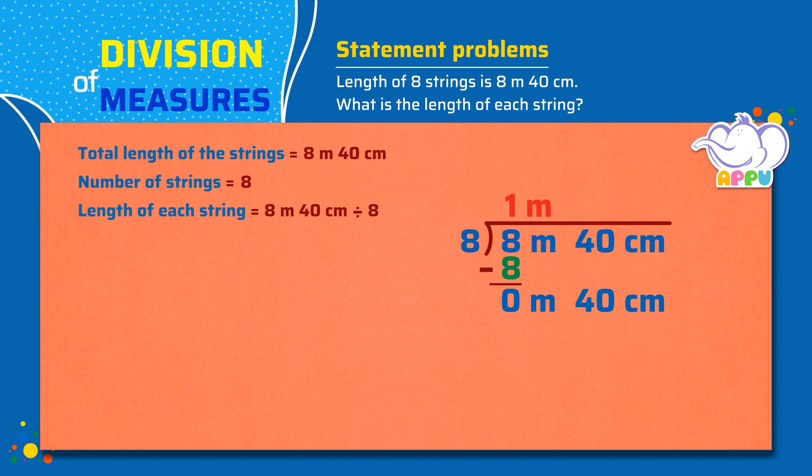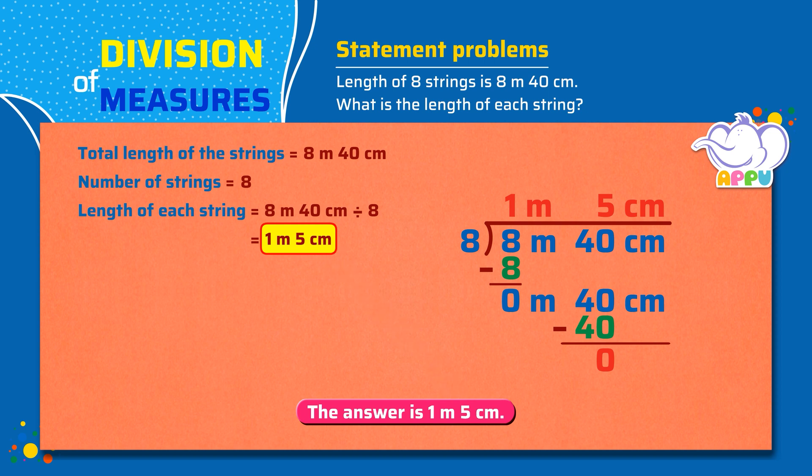8 divides 40 5 times. That is 40 centimeters. And 0 is the remainder. So the answer is 1 meter 5 centimeters. Excellent!